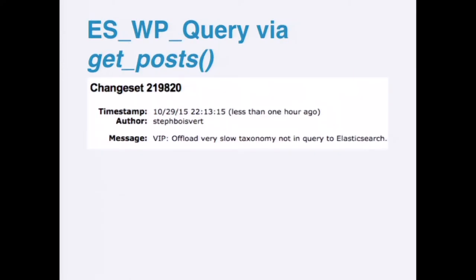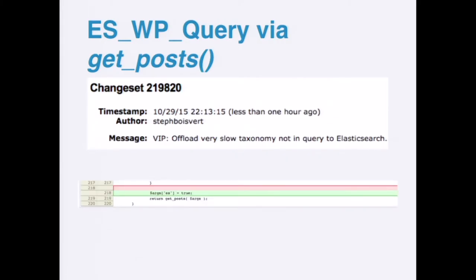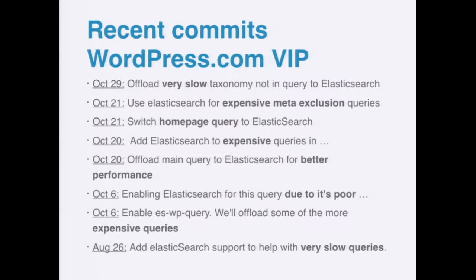This is really easy to do. Here's an example — a change set for VIP on WordPress.com. The commit message is 'offload very slow taxonomy not-in query to Elasticsearch.' To make this change, to just switch from MySQL to Elasticsearch, it's just one line of code: `args ES equals true` in the get_posts call. This is a very popular way that WordPress.com VIP solves scaling problems — with commit messages that highlight painful words like 'expensive,' 'poor,' and 'performance.'